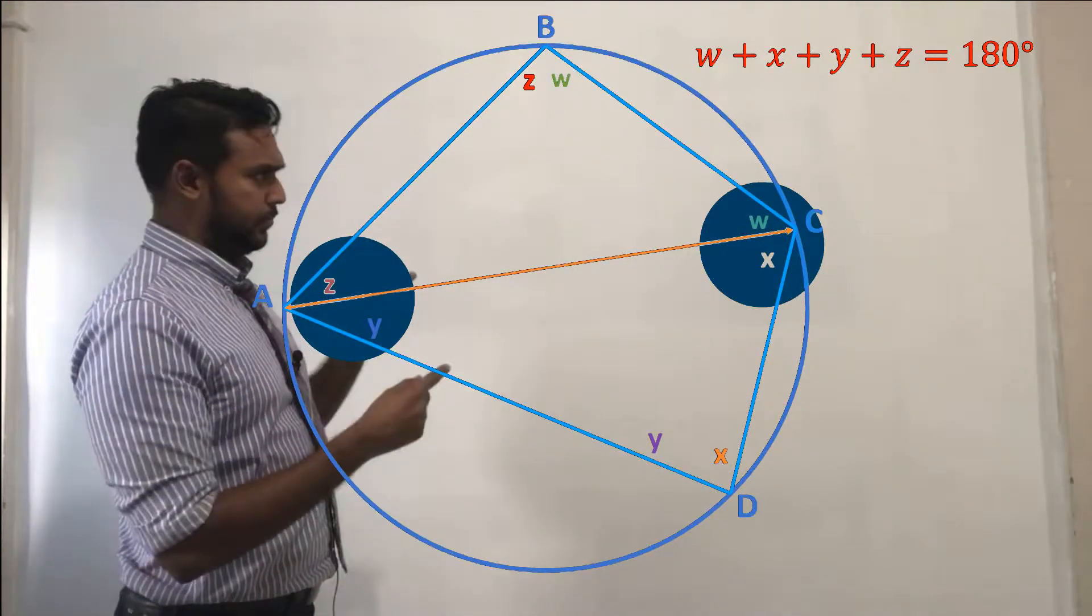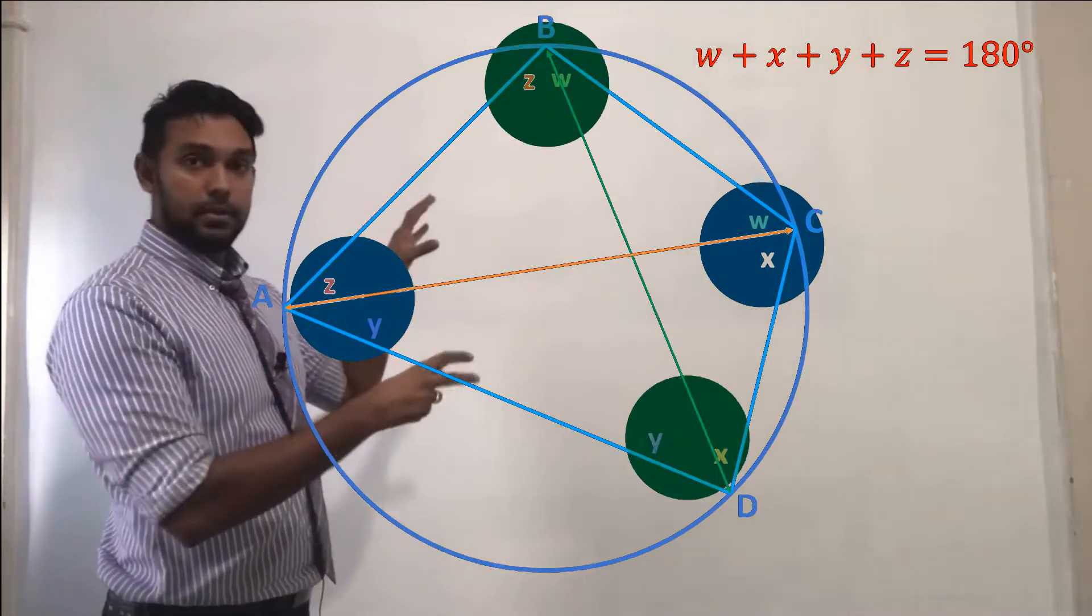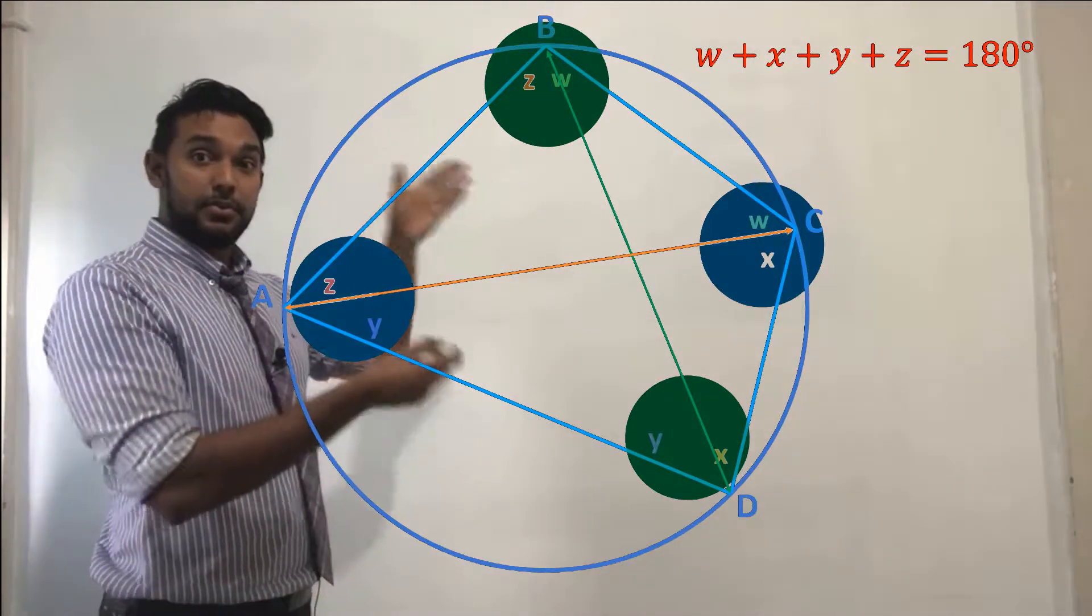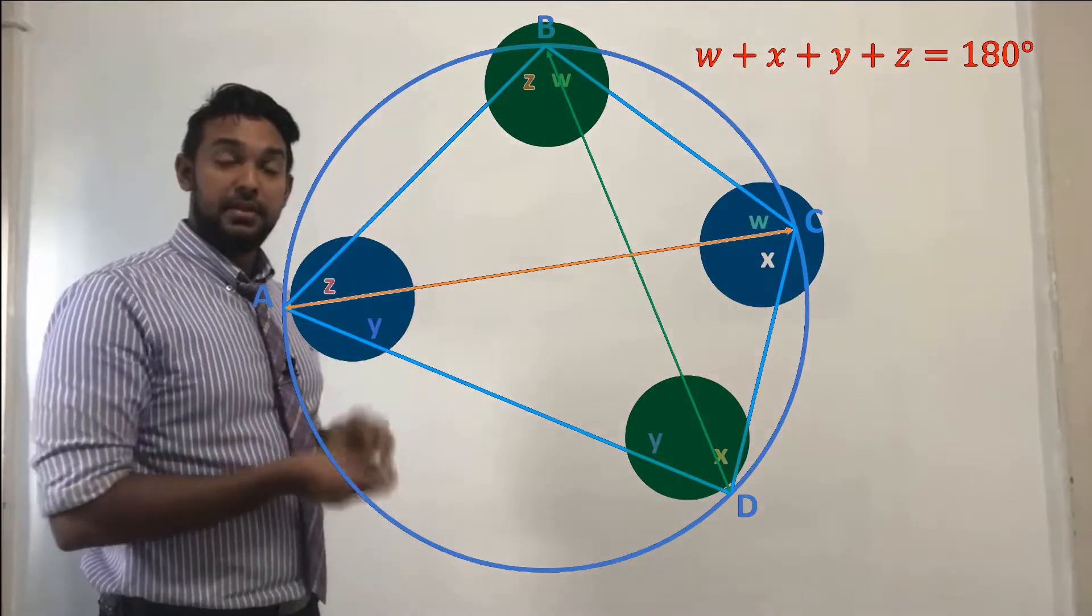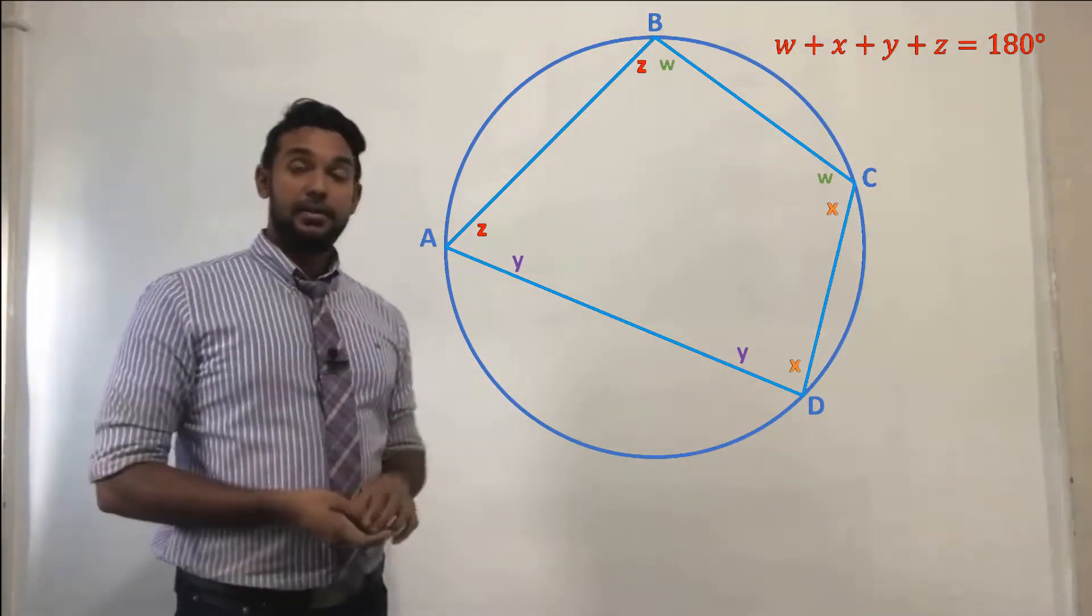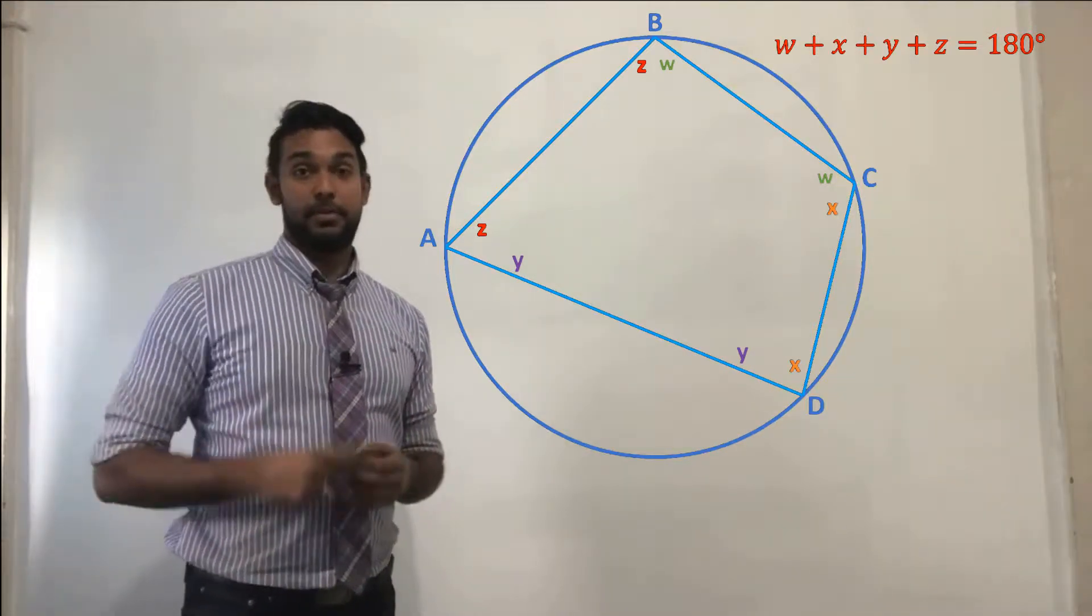Similarly, at B and D, if we consider all the components of those two angles, we have W, X, Y and Z again. So W plus X plus Y plus Z is equal to 180 degrees. And we've therefore shown that the opposite angles of a cyclic quadrilateral are supplementary.